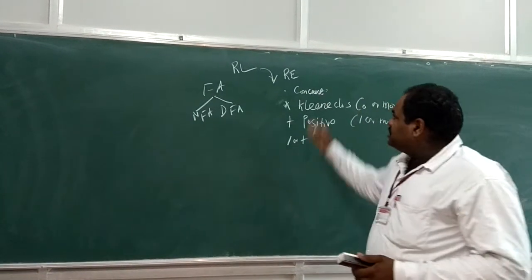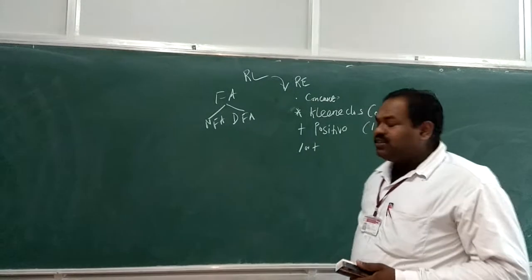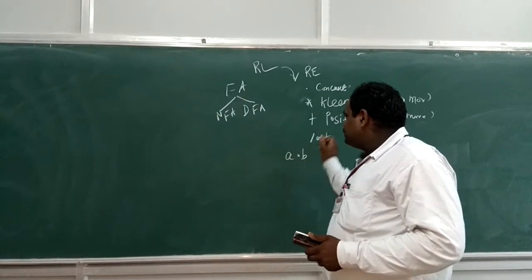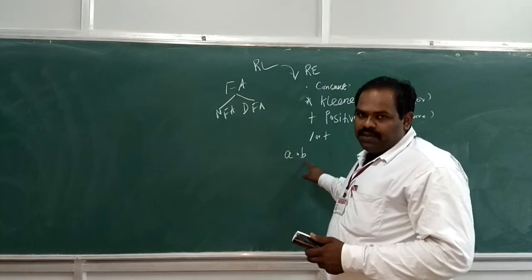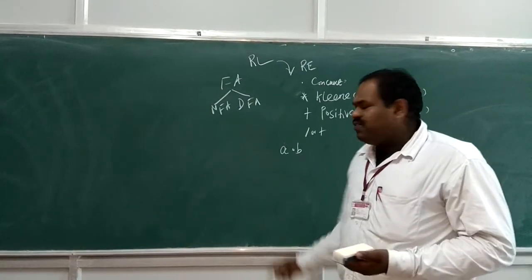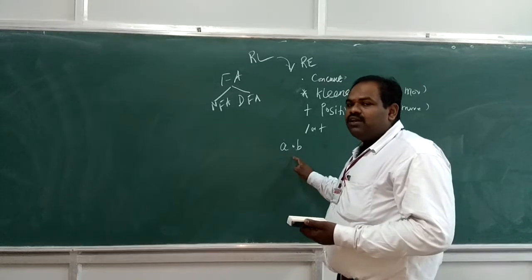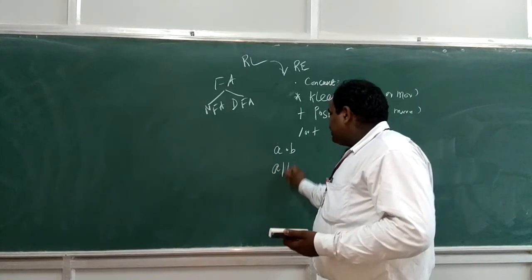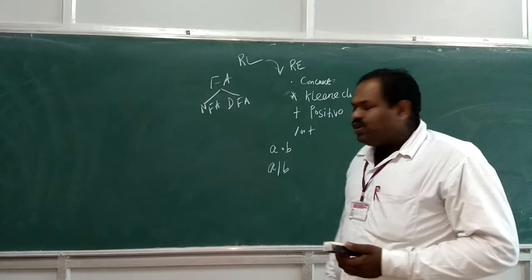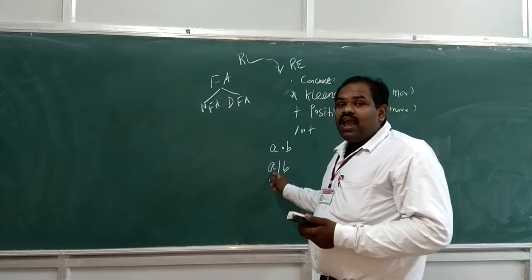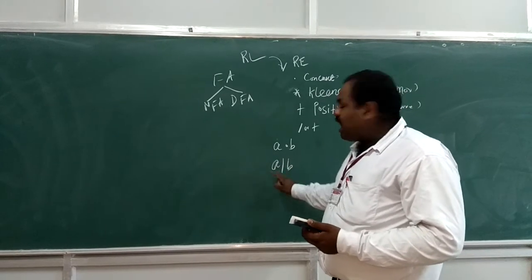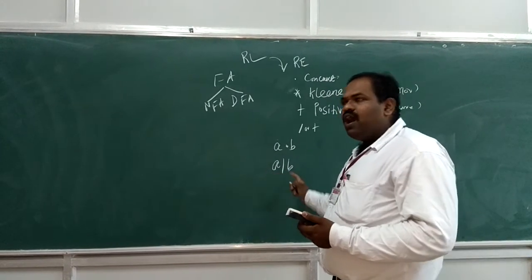Now we can see some example from the regular expression. That is A dot B. This is A, then followed by B. This is concatenation. Definitely, it starts with the A, then it followed by B. Then A slash B. What does A slash B mean? It's a union value. That means, the input is A or B. A or B.